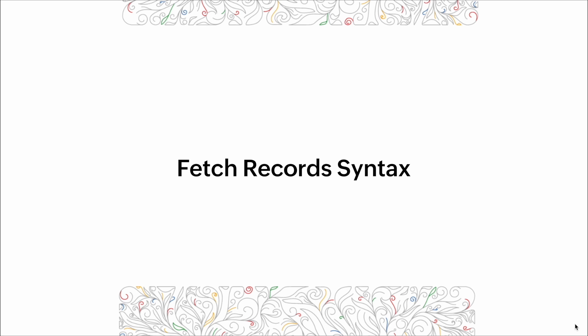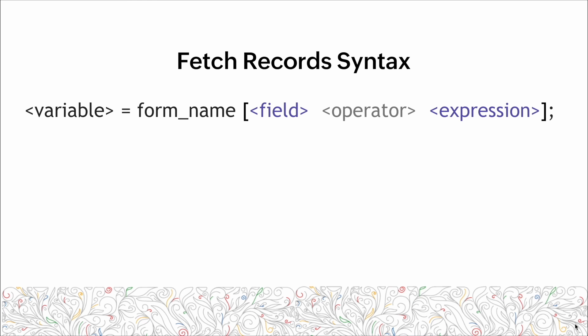The fetch record syntax. The fetch record syntax looks like this: we have the collection variable on the left side, an equal sign, then the form name which we're going to fetch records from, and then we have the criteria.